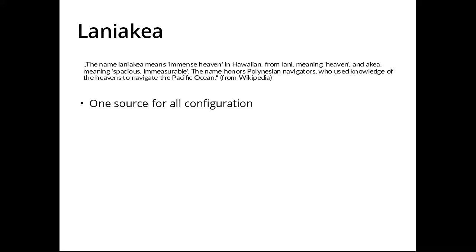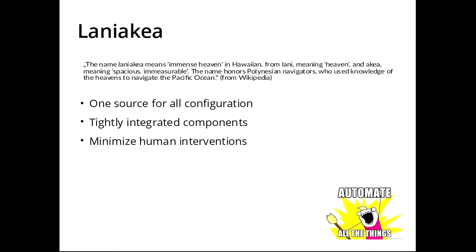The basic fundamentals of Laniakea are: we have one source for all configuration, which is a central database. We have tightly integrated components which only talk to the database. We want to minimize human intervention — so as soon as something can be done by a module inside Laniakea, we don't want any human to manually upload a package for rebuilding. For example, we want to upload a package and have Laniakea auto-detect what needs to be rebuilt and have it done without having to intervene. We also want a web interface, because that's how things are managed now, rather than having users SSH into machines.